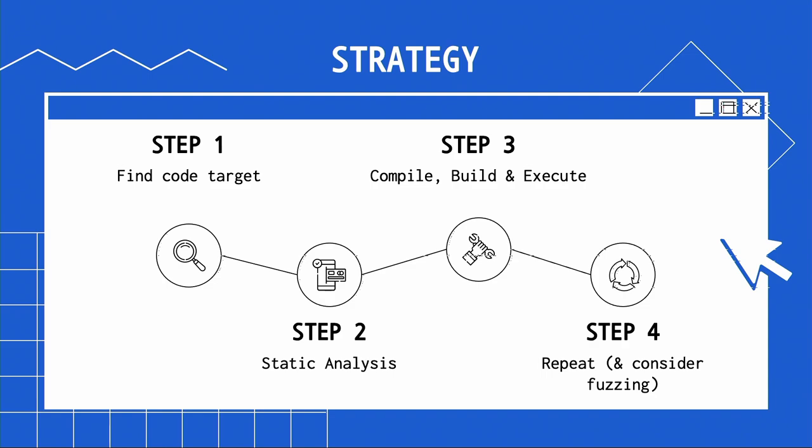Lastly, after we understand a bit how our product works, we can consider fuzzing, because now we know the expected structures and behavior of the program. We can try to write our own dummy fuzzer or a more fully advanced one. And of course, we can repeat these stages — if the bug we found isn't exploitable, we can go back to static code analysis.